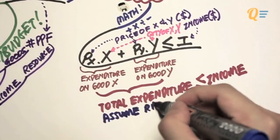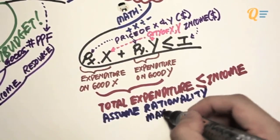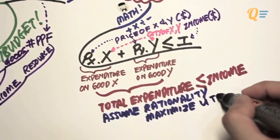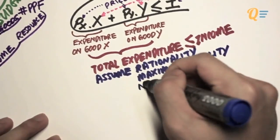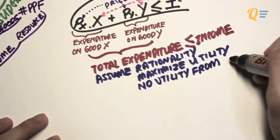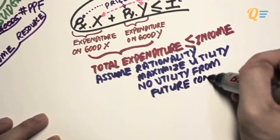In economics, we assume that all individuals are rational. So they are going to maximize their utility by basically spending all their money. There's going to be no utility derived from future consumption.